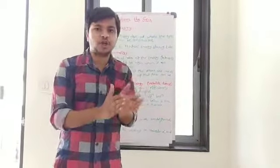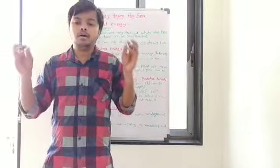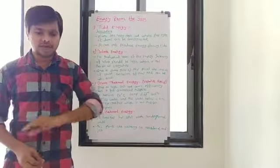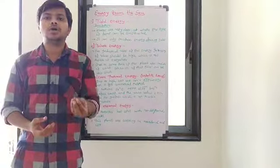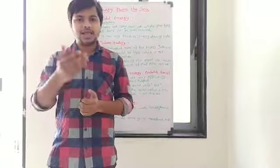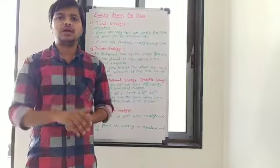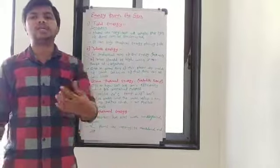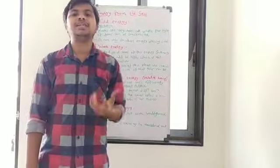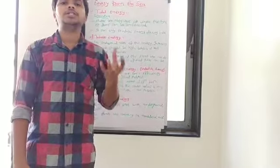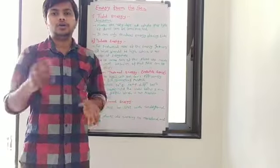At hotspots, the temperature of that layer of earth is much higher compared to other regions. When underground water comes in contact with this heat, it vaporizes. Sometimes this water comes out from the surface of the earth, which is known as a hot spring. If we use this heat to produce energy, it is called geothermal energy. Special types of pipes are used to draw that heat from the earth to vaporize the water.